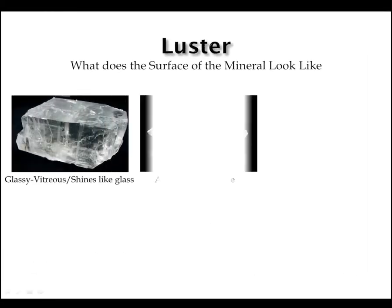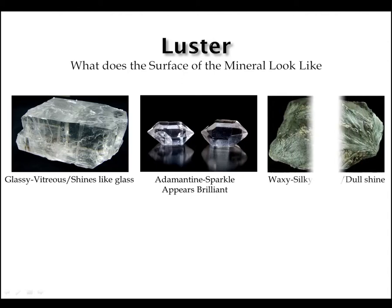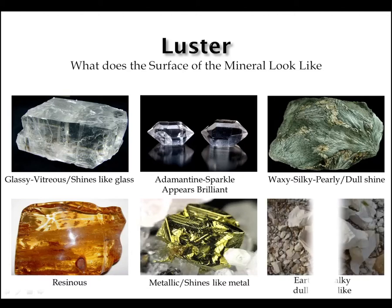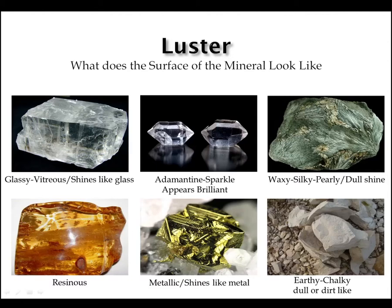Luster of a mineral is commonly described as being glassy or vitreous, adamantine, waxy, silky, or pearly, resinous, metallic, or earthy. Minerals with a glassy or vitreous luster shine like glass. Minerals with an adamantine luster sparkle like a diamond. A mineral with a waxy, silky, or pearly luster has a dull shine and appears waxy like a candle, similar to a piece of silk, or has a resemblance comparable to the surface of a pearl. Resinous minerals look like amber or hardened tree sap. Minerals with a metallic luster shine like a metal, and minerals with an earthy luster are dull and look like chalk or dirt.